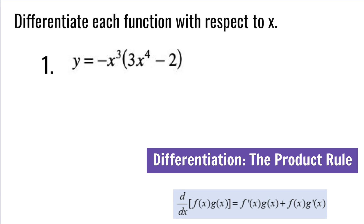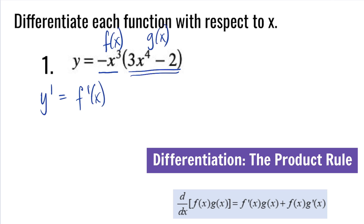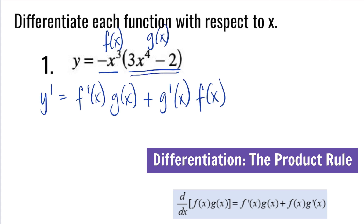For this problem, negative x cubed is our f(x), and 3x to the fourth minus 2 is our g(x). So now let's find the derivative y prime or dy over dx. The first thing we need to do is find the derivative of f(x), which is negative 3x squared, and then multiply it by g(x), which is 3x to the fourth minus 2.